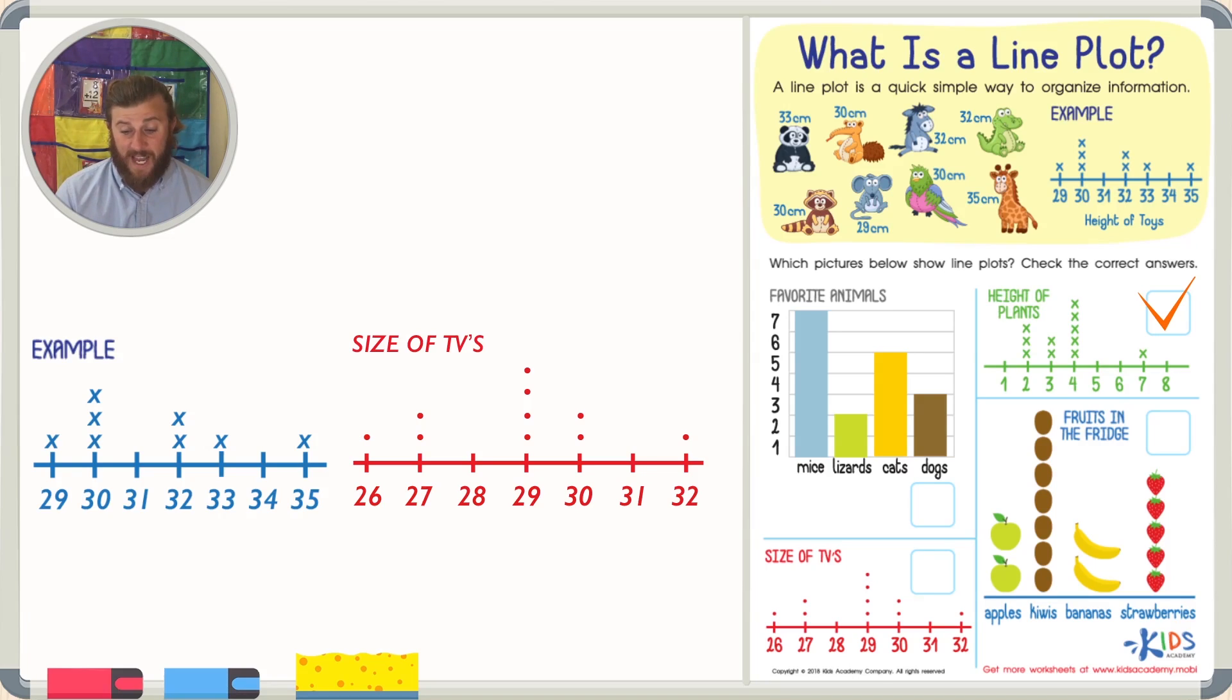So does this look like a line plot? I think so. Even though it doesn't have the X's like our example and other picture we saw, it does have dots to represent each TV. And whether it's a dot or an X, they're set up in the same way. They have the numbers on the bottom and each dot or X represents just one TV, so this is a line plot. Let's go ahead and check it.